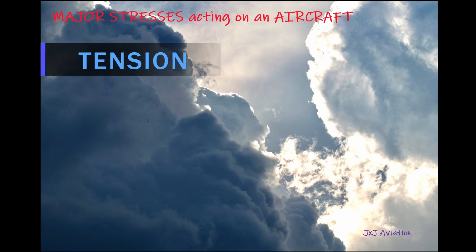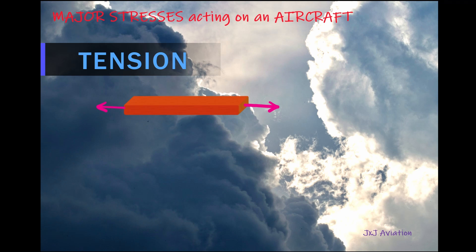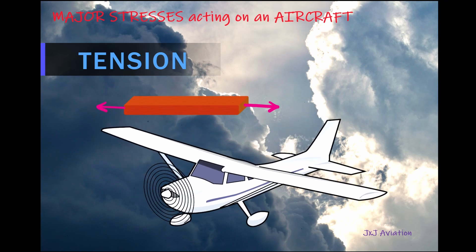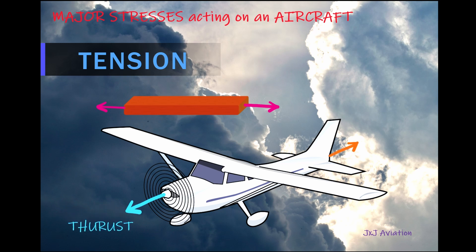Tension. This is the stress experienced by an object when forces are acting in opposite directions. An example of this on an aircraft would be the thrust force which is acting forward and the drag force which is acting backward.